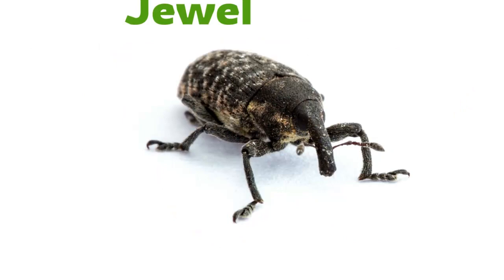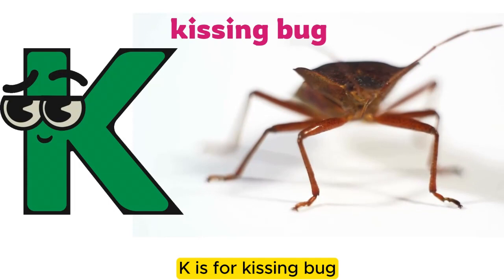I is for Imperial Moth. I, I, I, Imperial Moth. J is for Jewel Beetle. J, J, J, Jewel Beetle.